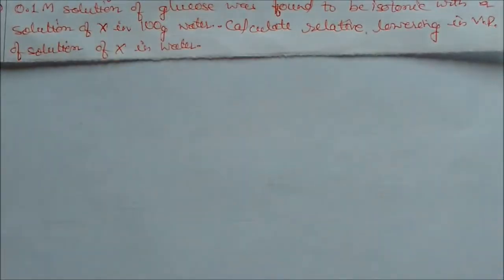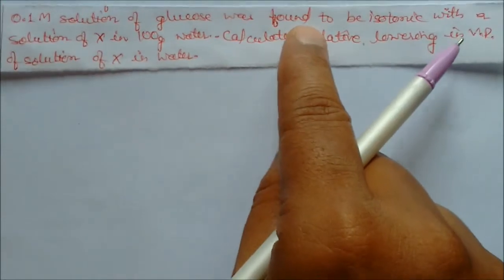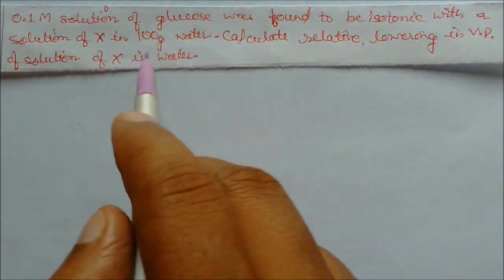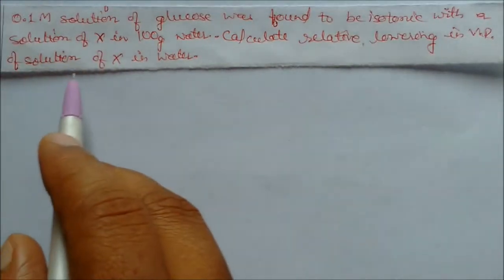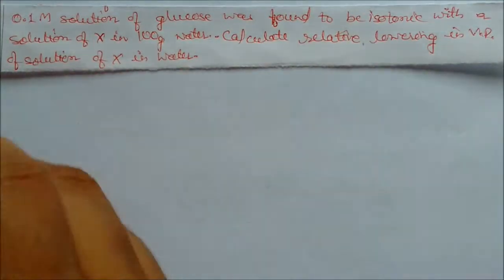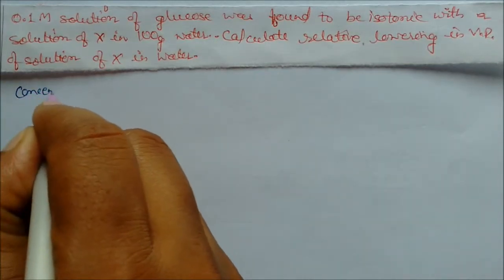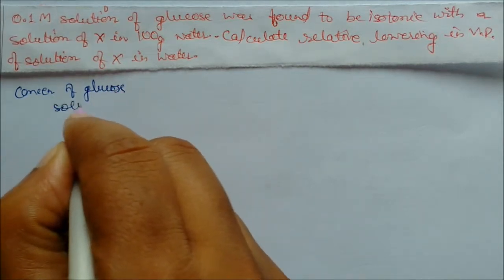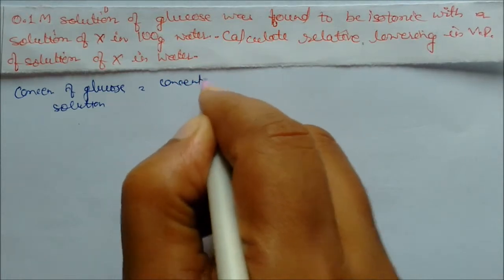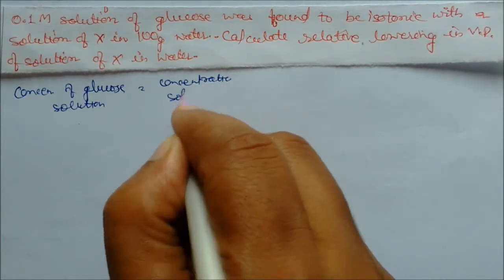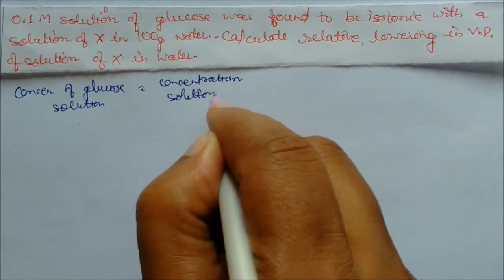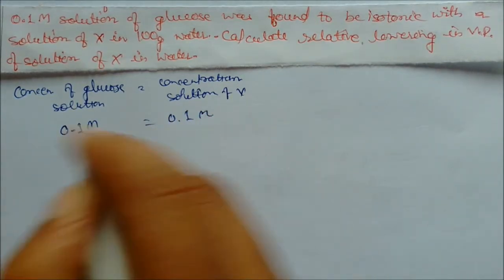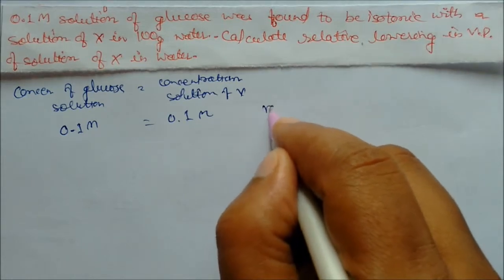A 0.1 molar solution of glucose was found to be isotonic with a solution of X in 100 grams of water. Calculate the relative lowering of vapor pressure in the solution of X in water. Since isotonic means equal concentration, the concentration of glucose equals the concentration of X, so molarity of X is also 0.1 molar.